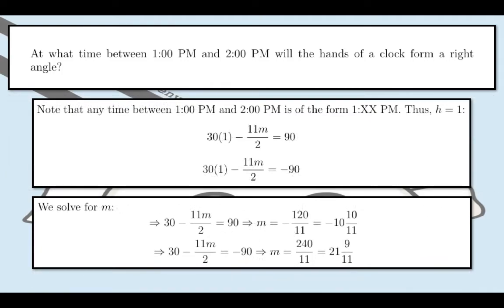We just substitute h equals 1 into the equations. Now all we have to do is solve for m. We solved for m through algebraic manipulation, which gives you m equals negative 120 over 11, or in mixed fractions, negative 10 and 10 over 11. And the other case would give you m equals 240 over 11, which is 21 and 9 over 11. However, we have a problem here. The first equation gives us a negative value. It doesn't make sense for us to say negative minutes when talking about a time. This value of m is actually an extraneous solution. So we would only consider 21 and 9 over 11 in this case.